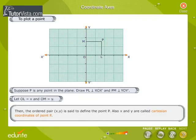Then, the ordered pair (x, y) is said to define the point P. Also, x and y are the Cartesian coordinates of point P.